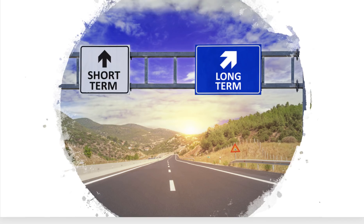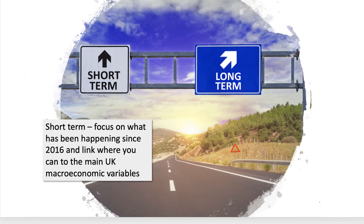One important distinction is to make between the short-term and the long-term impact and consequences. The short-term is really a focus on what's been happening in the last three years since the referendum happened, and critically, as with all the macro questions, link where you can to the main macro UK variables — inflation, unemployment, growth, and all that kind of stuff.